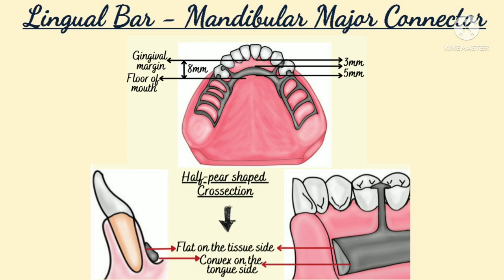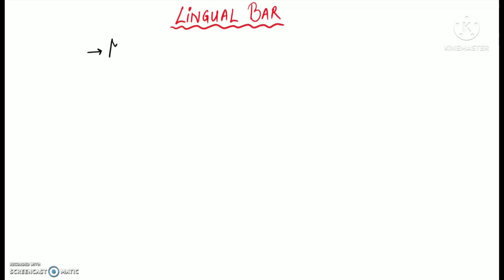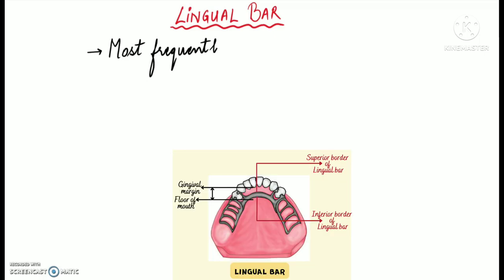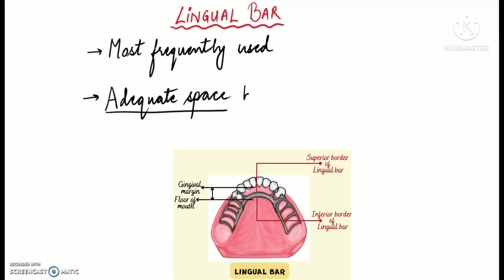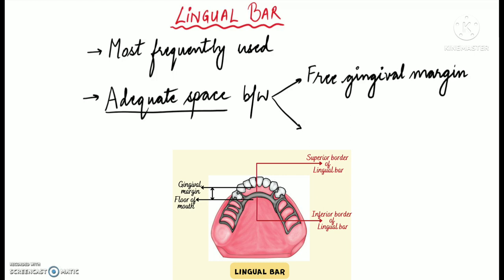Lingual bar is the most frequently used mandibular major connector. It is mostly indicated for all tooth-supported removable partial dentures if there is adequate space between the free gingival margins of the mandibular teeth and the floor of the mouth. The availability of this space is a major factor in determining whether a lingual bar can be used or not.